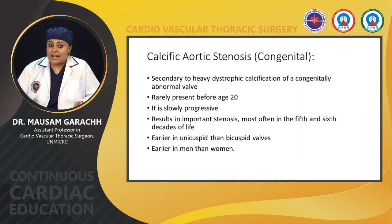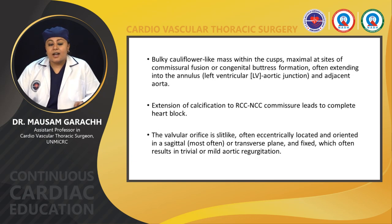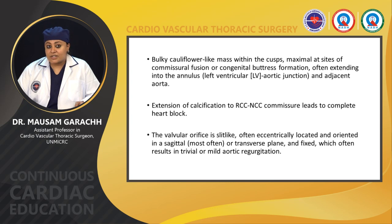Calcific aortic stenosis is congenital, secondary to heavy dystrophic calcification of a congenitally abnormal valve. It rarely presents before age 20. It is slow progressive, resulting in important stenosis most often in the 5th and 6th decade of life. It is earlier in unicuspid than bicuspid valves. Pathologically, there is a bulky cauliflower-like mass within the cusp, maximum at the site of commissural fusion or congenital buttress formation, often extending into the annulus and adjacent aorta.